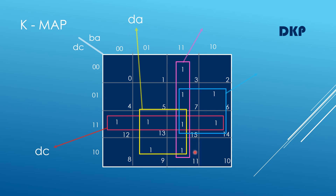The next quad gives the product term BA, because this represents 11, and 11 represents BA. The last quad gives the product term CB.